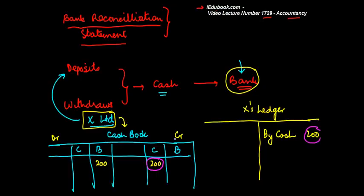At the same time, if there was any withdrawal from the bank, what will happen is that it is going to be debited in the cash column and it is going to be credited in the bank column. So, this is withdrawal, this is deposit.